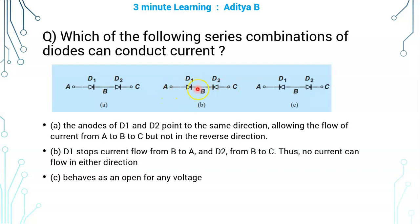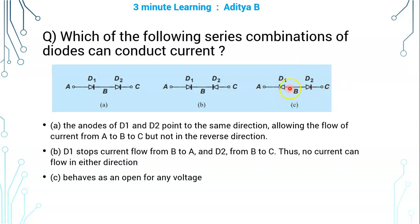When elements are connected in series, both must conduct for there to be an overall current flow. Likewise, in Figure C, whether the potential at A is greater than C or the potential at C is greater than A, in both cases both diodes will be off — they are open circuit. So this series combination also will never conduct.